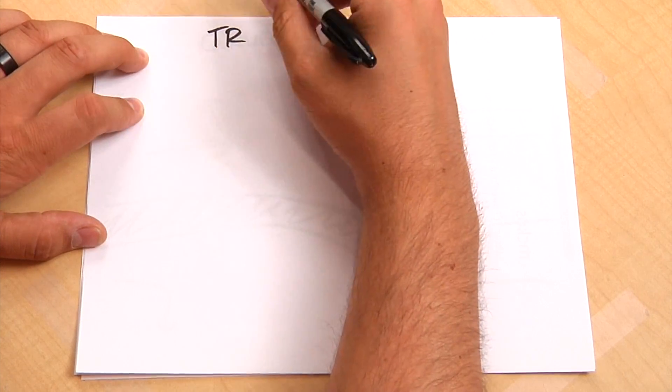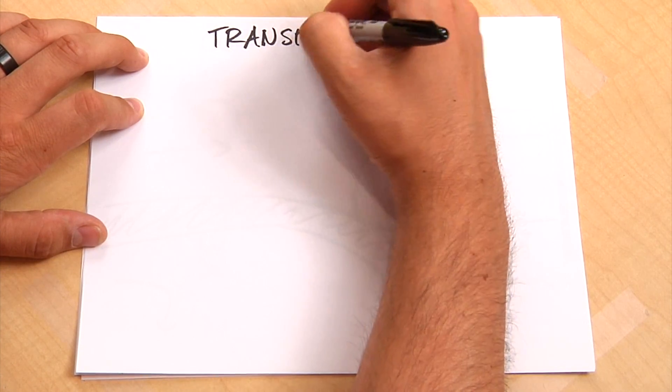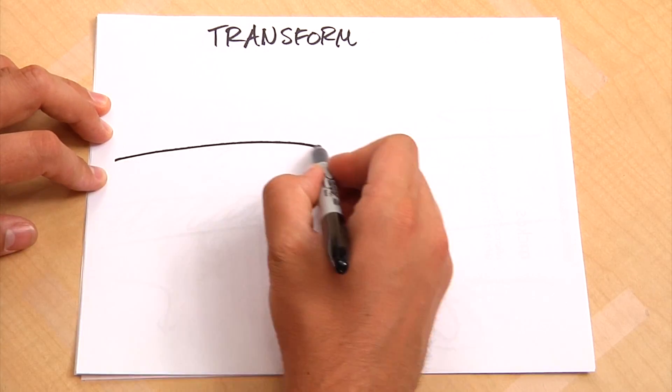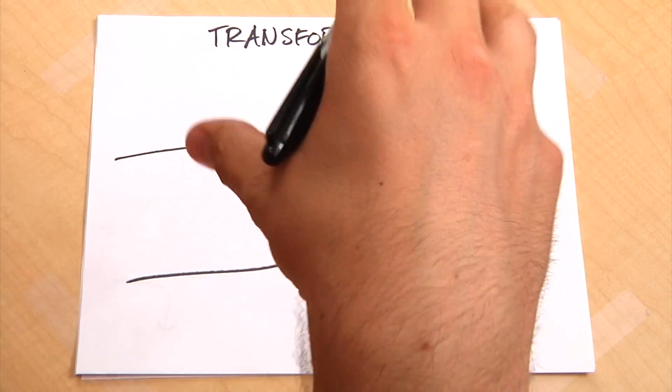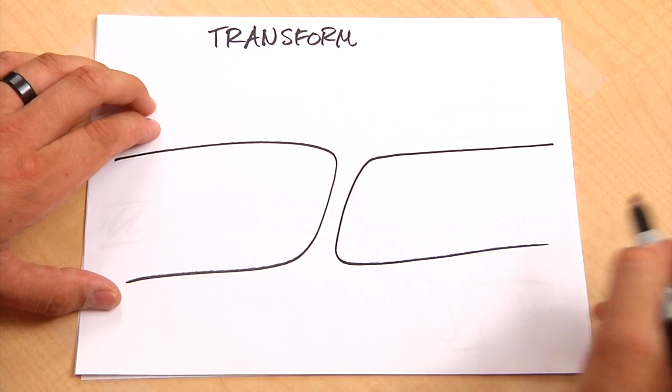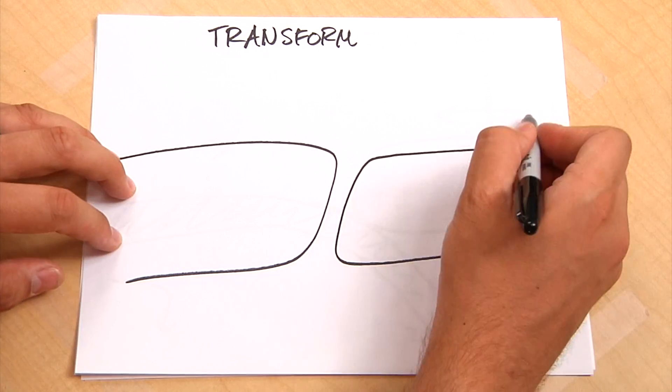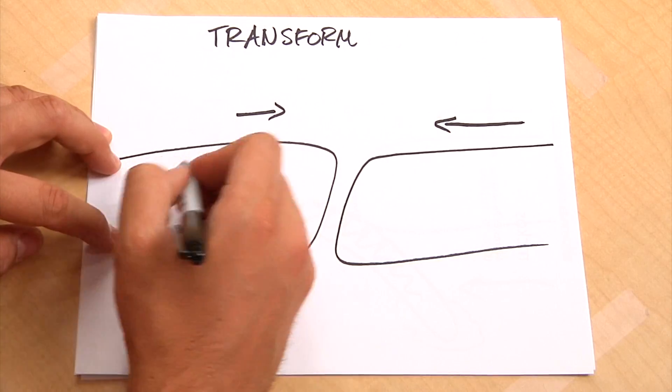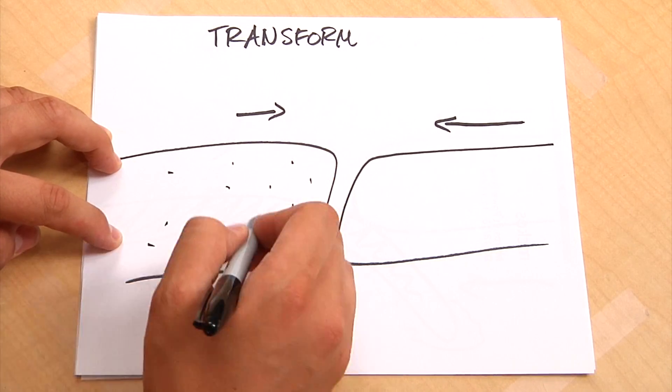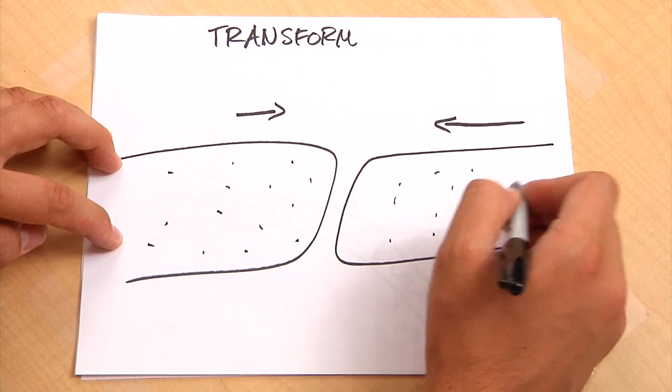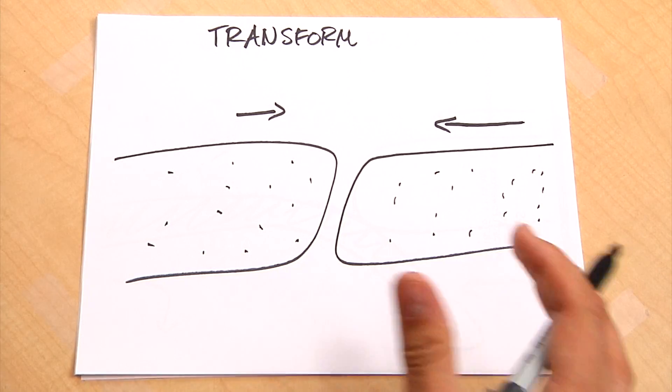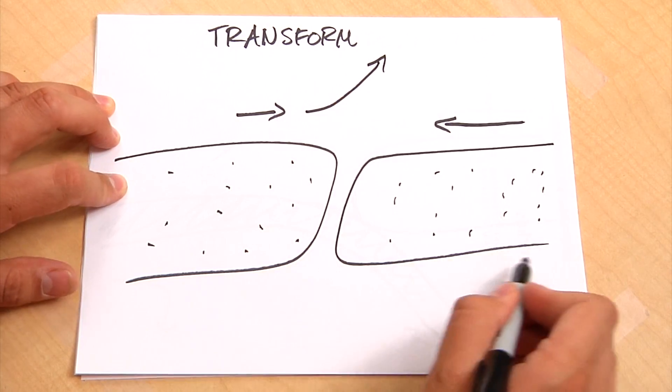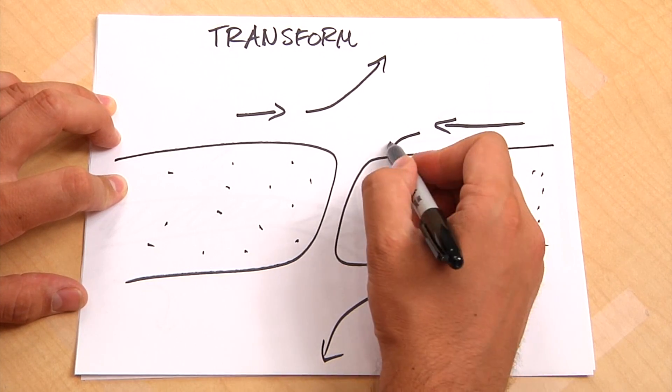And then the last one is a transform. And a transform plate boundary, I'm actually going to draw it from the top. So imagining you're looking down on these two plates, and they're being pushed together, but because, because we'll say they're two continental plates. Two granite continental plates, they weigh about the same amount, and neither one is going to get on top of the other. So they're actually going to just slide off, kind of like so, side by side.